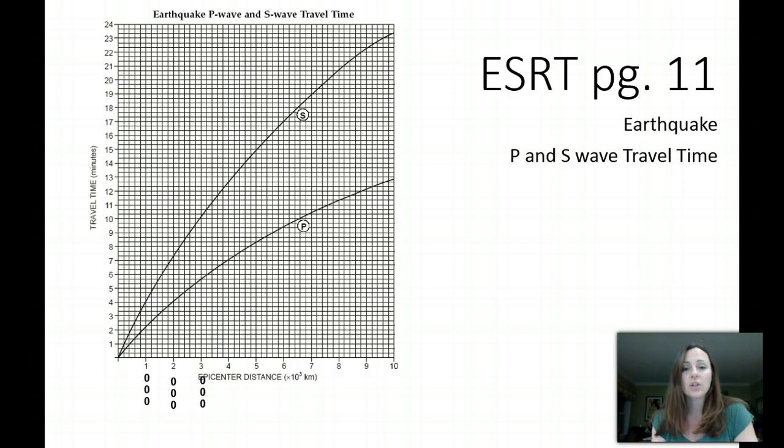If those are each 1,000 kilometers apart, that means each of these boxes in between must equal something. So we need to determine what that is. Well, if each is 1,000 and there are 1, 2, 3, 4, 5 boxes, 1,000 divided by 5 gives you 200. So each box on the bottom is worth 200. And you can write that along the bottom of your chart as well.